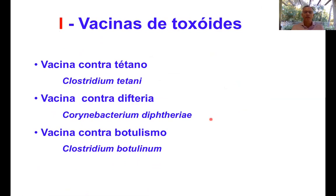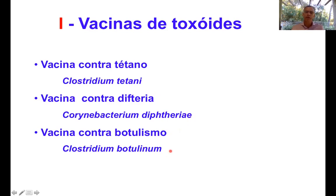Existem vacinas de toxóides que são produzidas desde a década de 20, como a vacina contra tétano, causada pela bactéria Clostridium tetani, a vacina contra difteria, causada pelo Corynebacterium diphtheriae, e também existe uma vacina contra botulismo, causada pelo Clostridium botulinum. Esse é o primeiro grupo de vacinas de subunidades, chamadas vacinas do tipo toxóides.